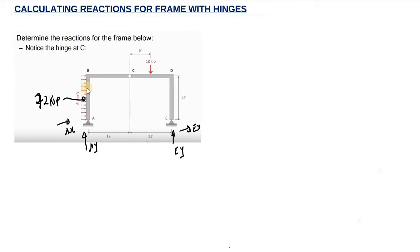The 72 kip equivalent force is acting at the middle of the rectangle. Now what we need to do is calculate the reactions. We are going to calculate EY by taking the summation of moments at point A equal to 0. Because if we do this, AY and AS are going to be equal to 0 since they all pass through point A and produce no moment.